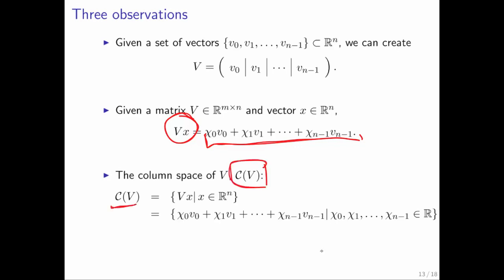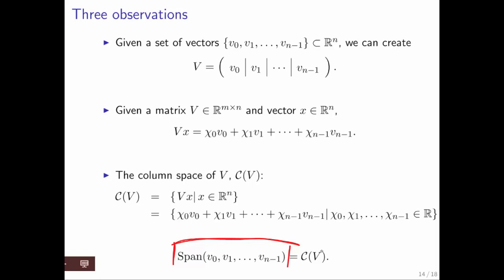C of V is the set of all vectors that can be written as V times x. But notice that that's the set of all vectors that are linear combinations of these columns for all possible coefficients. And notice that that's the definition of the span. So the span of a set of vectors is the same as the column space of the matrix that has those vectors as its columns.